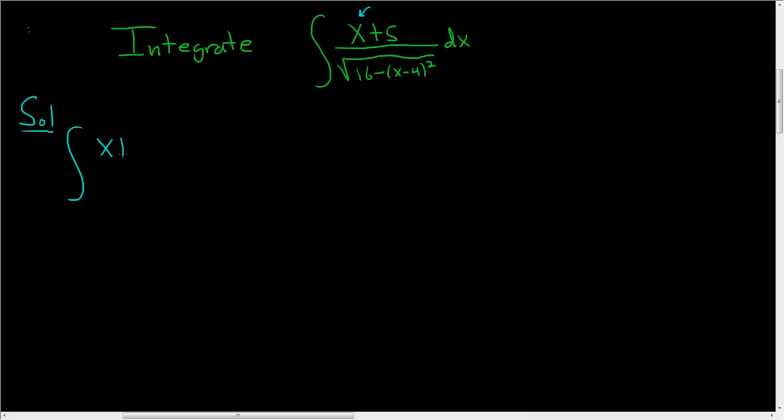So let's start by rewriting it first. So we have x plus 5 divided by the square root of 16 minus x minus 4 quantity squared. And the trick is to write this as follows.